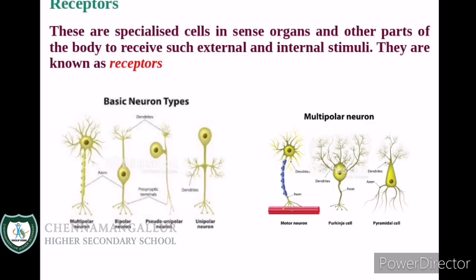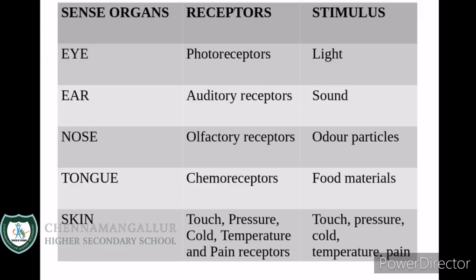In our body, we have receptors to receive these stimuli. These are specialized cells in sense organs and other parts of the body to receive such external and internal stimuli. They are known as receptors. Look at the table — for each sense organ, there will be a specific receptor and stimulus.